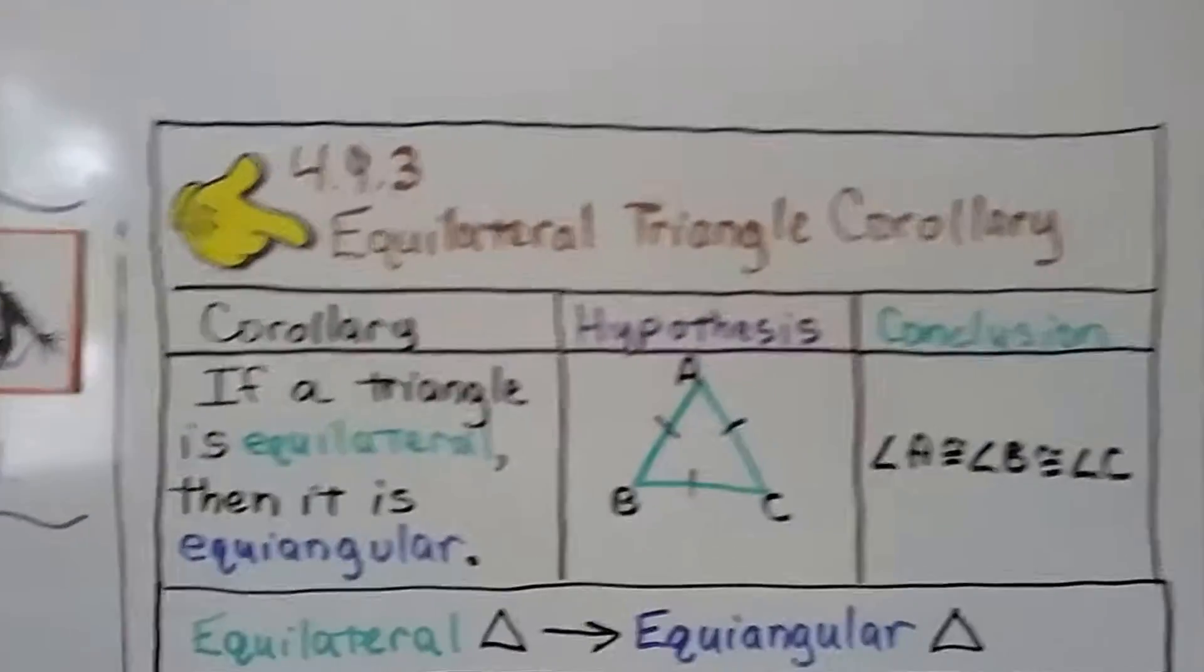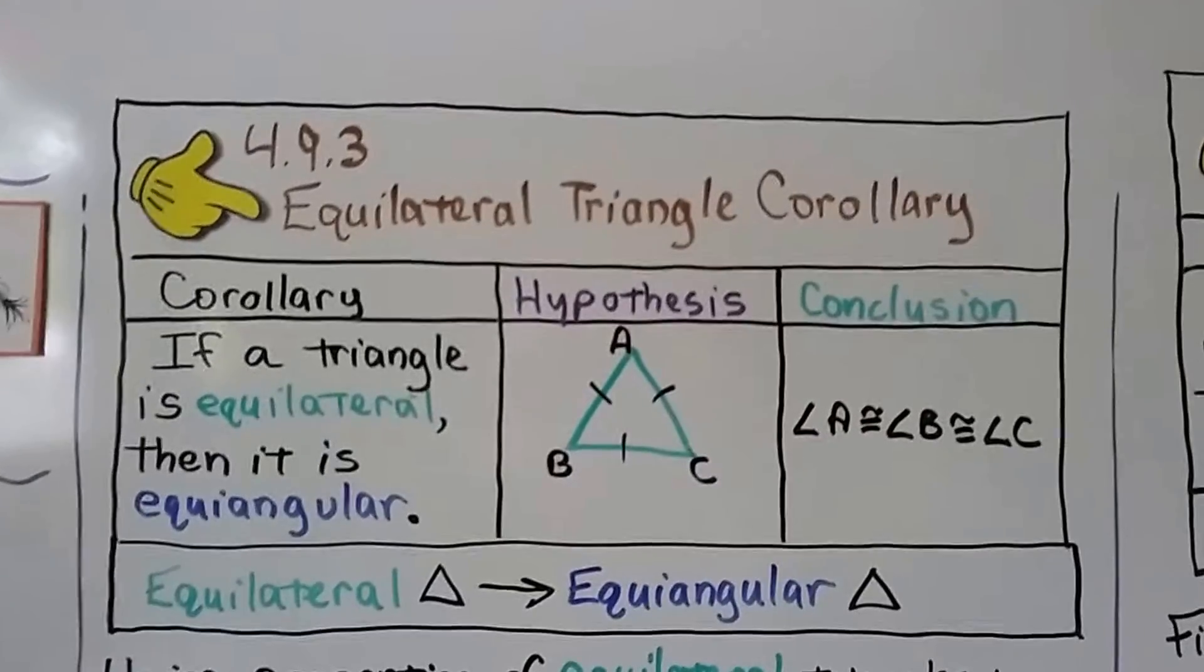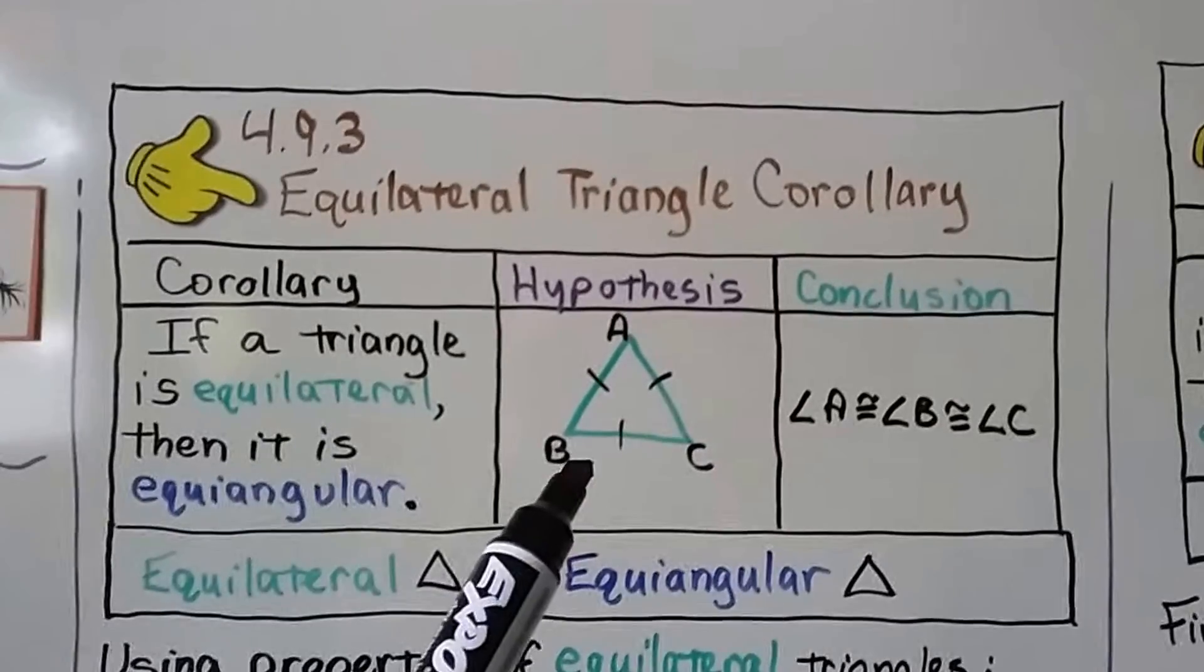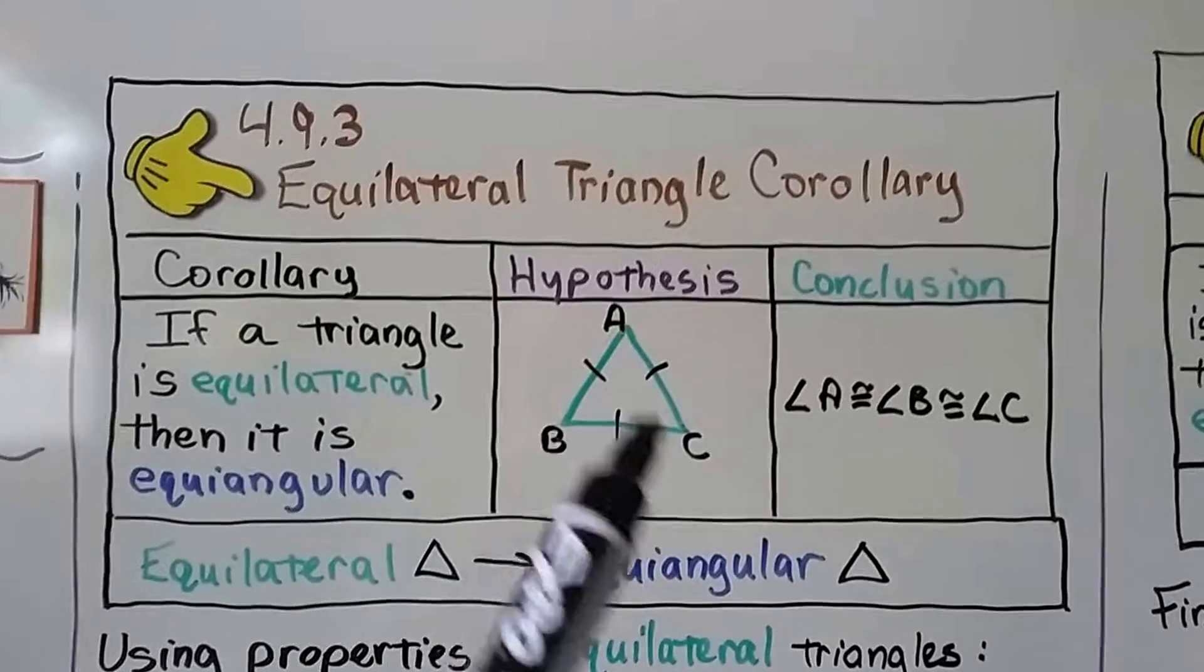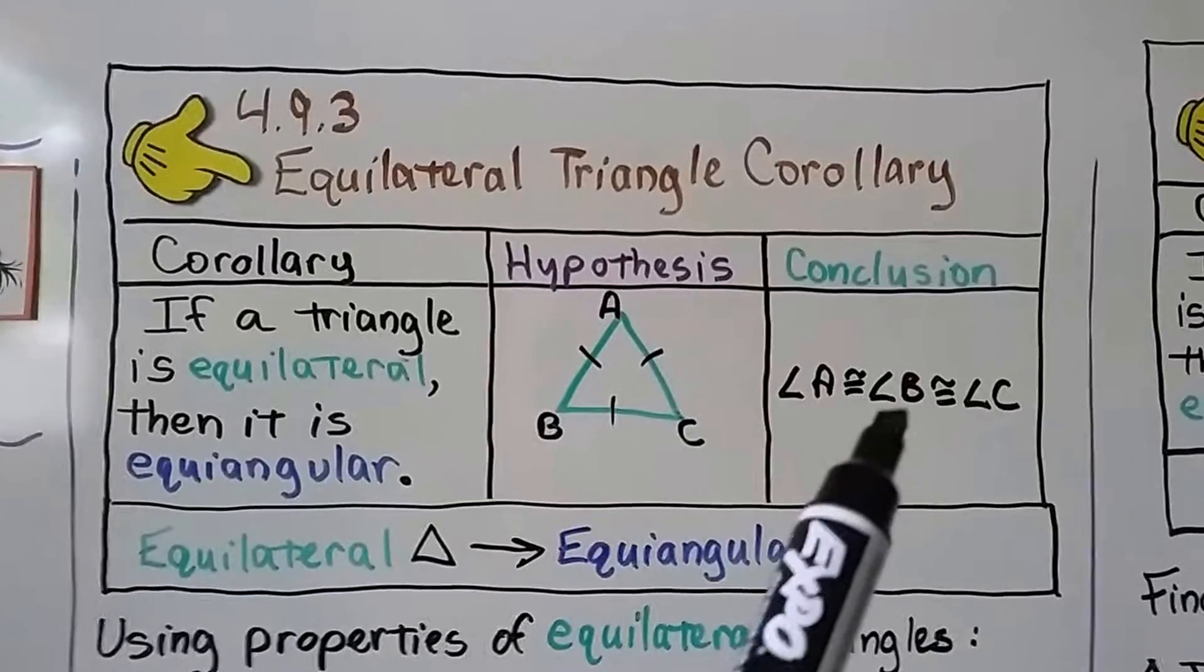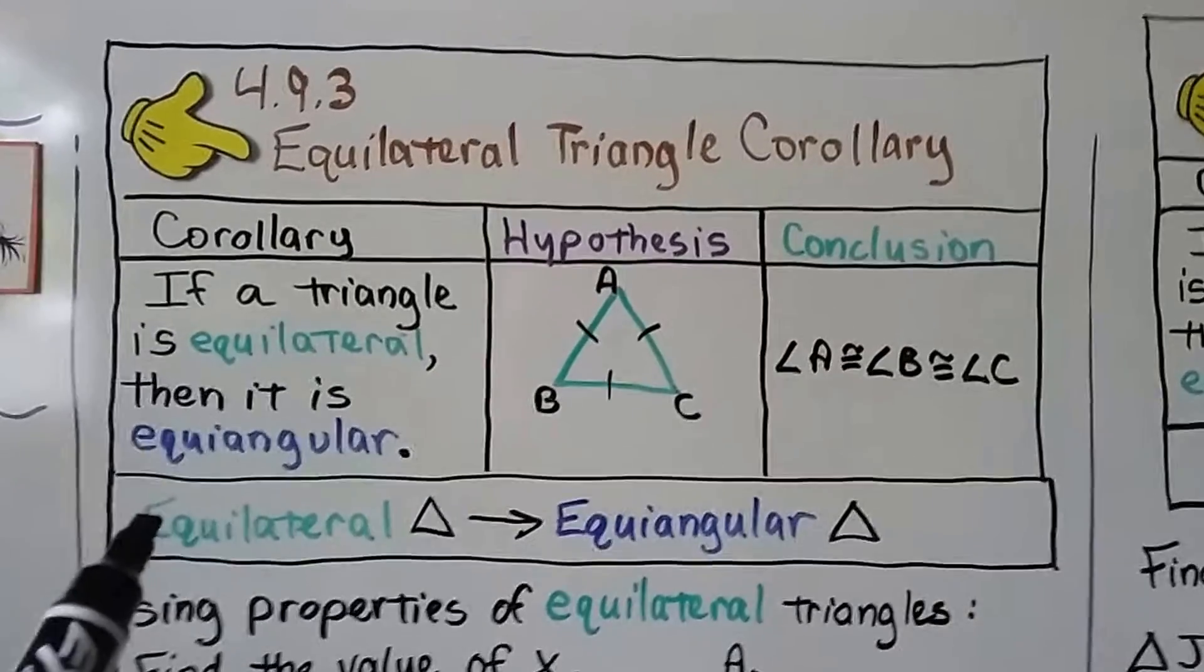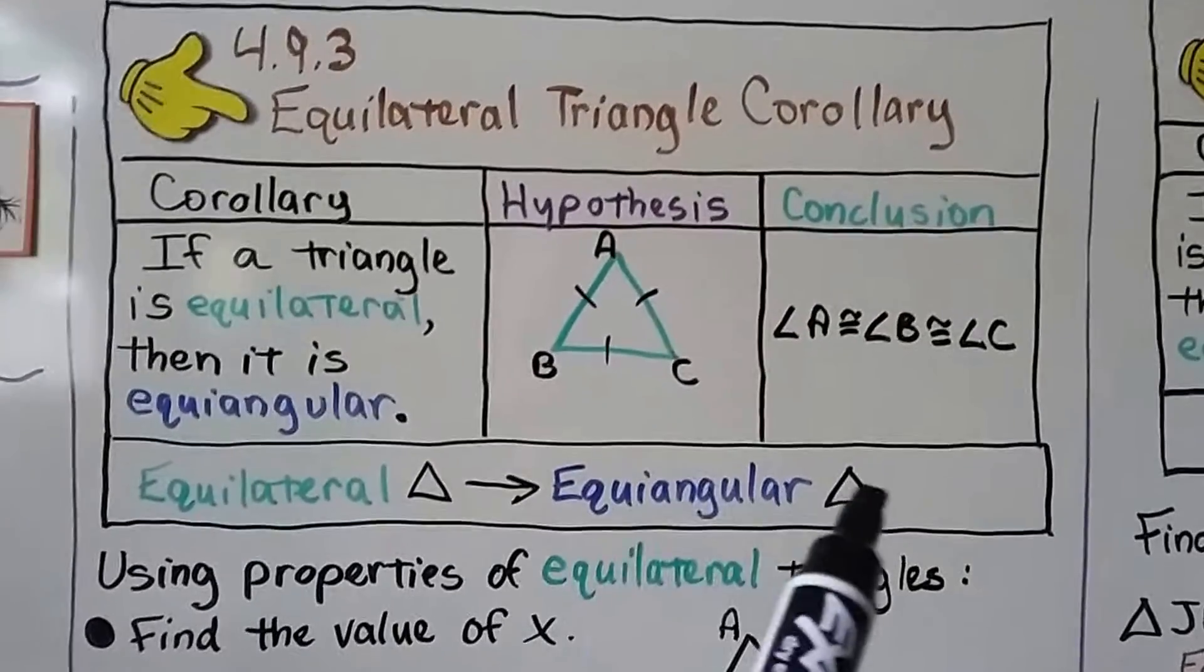Here's the equilateral triangle corollary. The corollary says if a triangle is equilateral, then it's equiangular. We have a triangle here that's equilateral. All the sides are congruent. That means the angles are all congruent. Angle A is congruent to angle B and that's congruent to angle C. You can write this in a proof as equilateral triangle, the arrow for therefore, equiangular, and then a triangle.